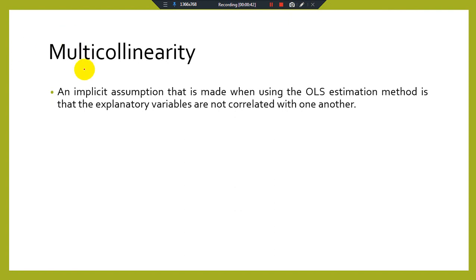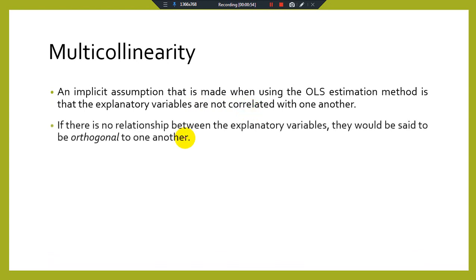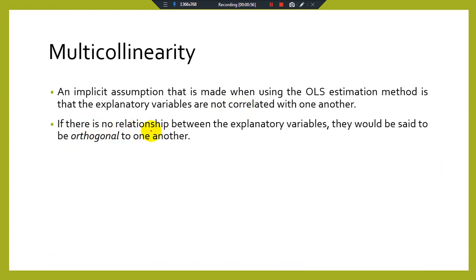One of the main assumptions of OLS is that there is no correlation between the explanatory variables. An implicit assumption made when using the OLS estimation method is that the explanatory variables are not correlated with one another. If there is no relationship between the explanatory variables, they would be said to be orthogonal to one another.